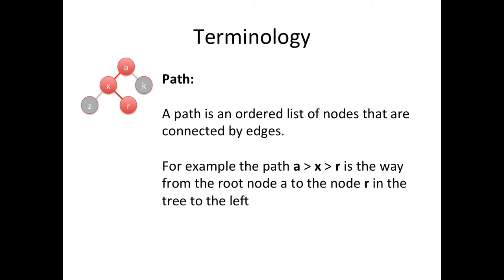A path is an ordered list of nodes that are connected by edges. Now in any tree you can pick any node and you can describe a path that goes from the root to that node. So for example if you pick the R node the path A-X-R would describe how you get from the top root of the node to that path to that specific node R. So that's called a path.